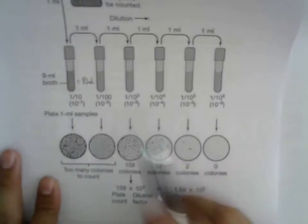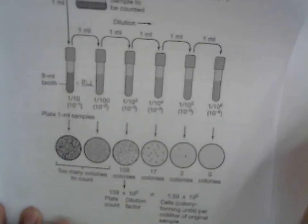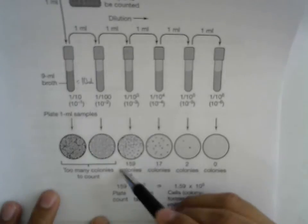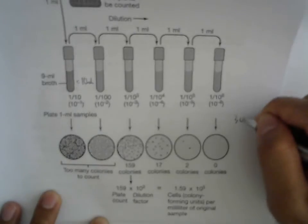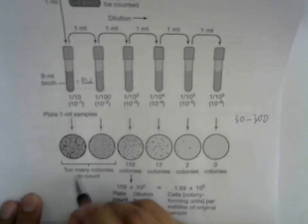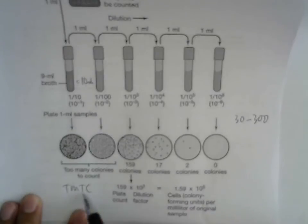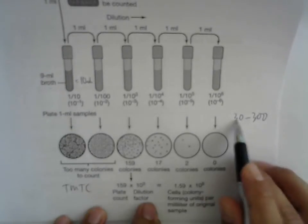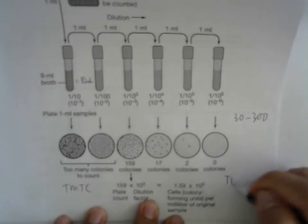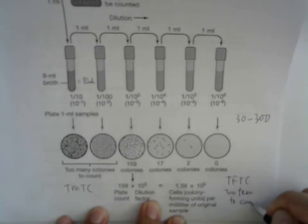Why do we have to do this? Because we want to count, and we have to find colonies within the range of 30 to 300. If there are too many colonies it is called TMTC — too many to count. If there are fewer than 30 it is TFTC — too few to count.